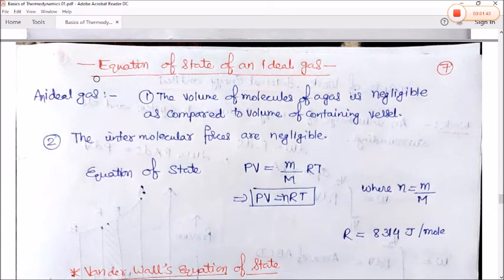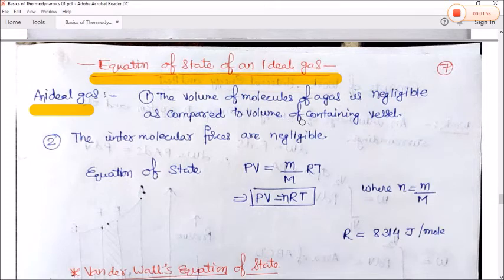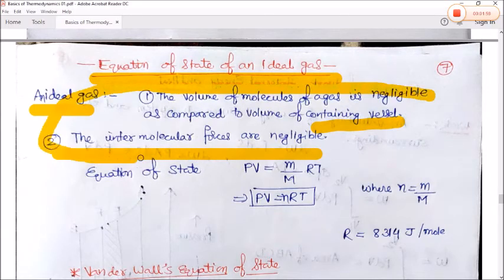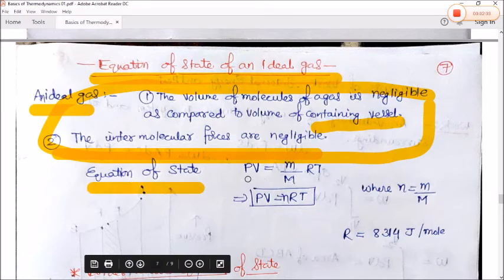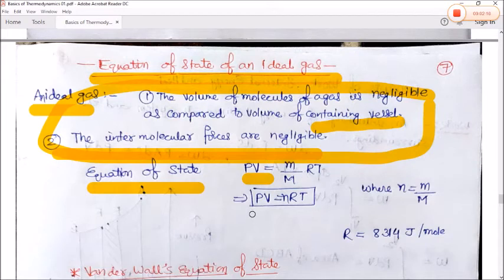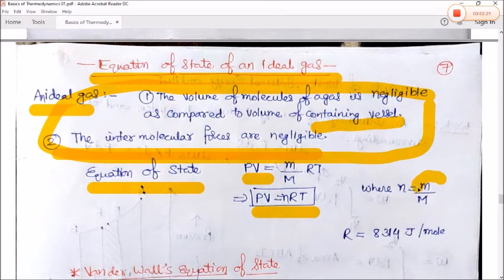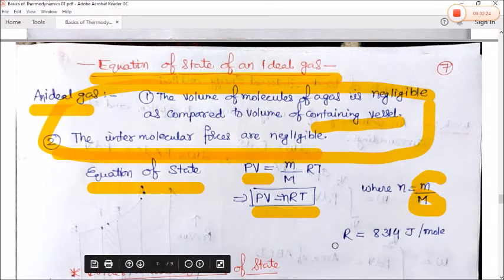Next is the equation of state of an ideal gas. An ideal gas is one in which the volume of the molecules is negligible compared to the volume of the containing vessel and intermolecular forces are negligible — from kinetic theory. The equation of state is PV = (m/M)RT = nRT, where n = m/M is the number of moles (mass divided by molar mass).